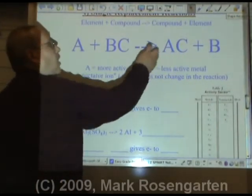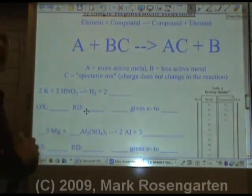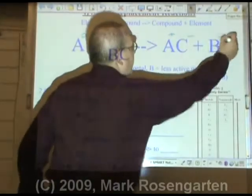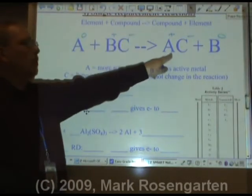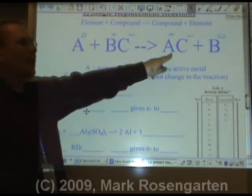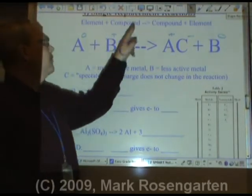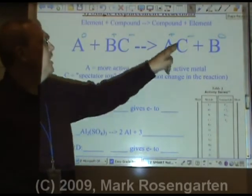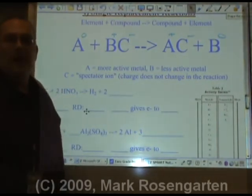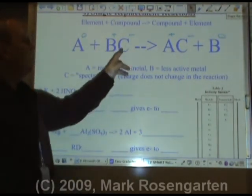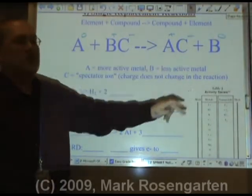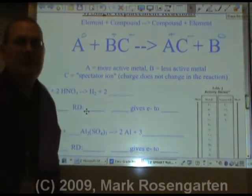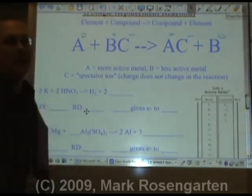C doesn't do anything. It's called the spectator ion. A becomes more positive in charge, it's oxidized. B becomes more negative in charge, it's reduced. But C just sits on its big, fat, pimply butt not doing anything. Therefore, it's just sitting there watching the action go down. And what do you call someone who watches the action go down? That's right, a spectator.